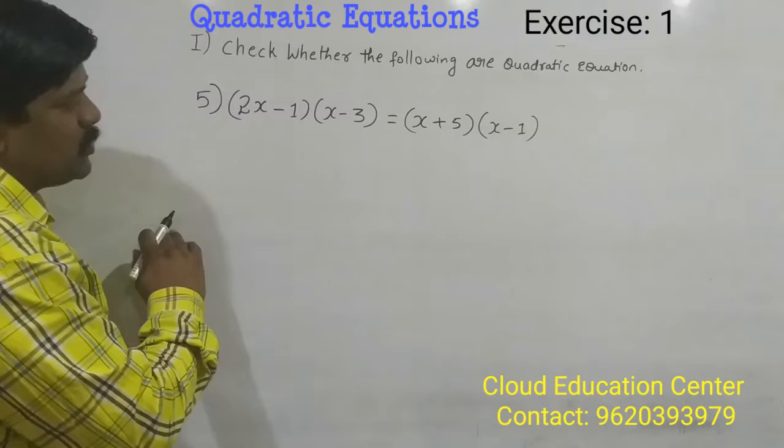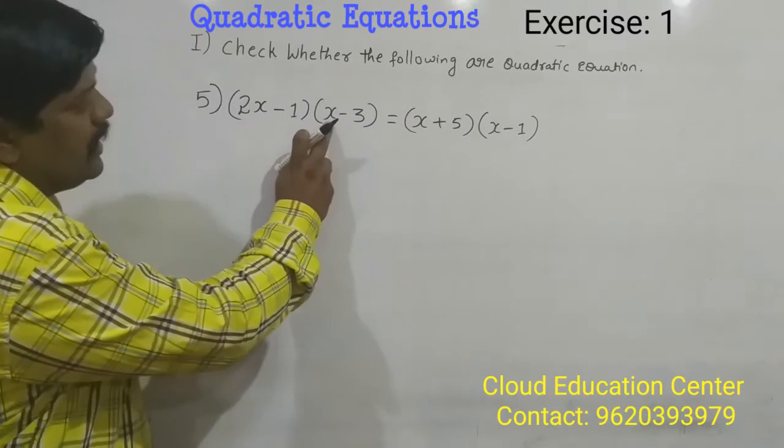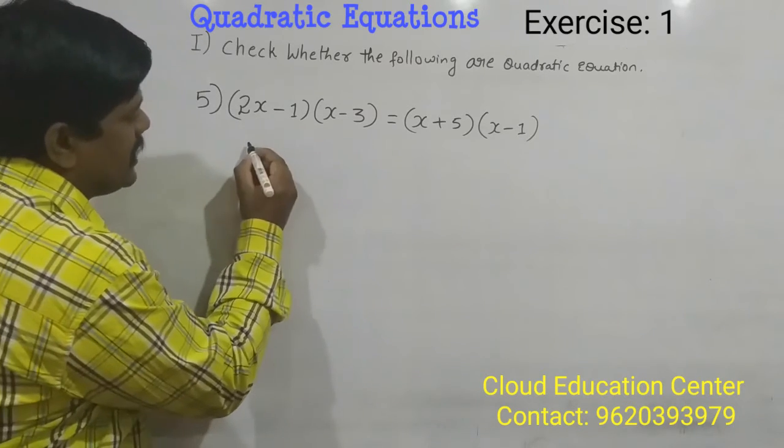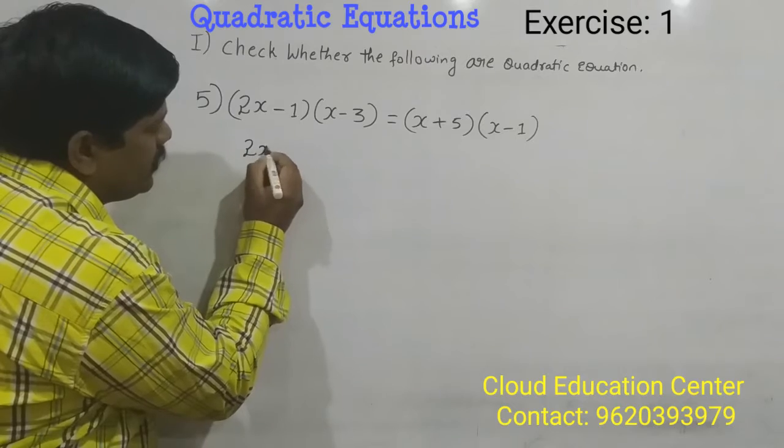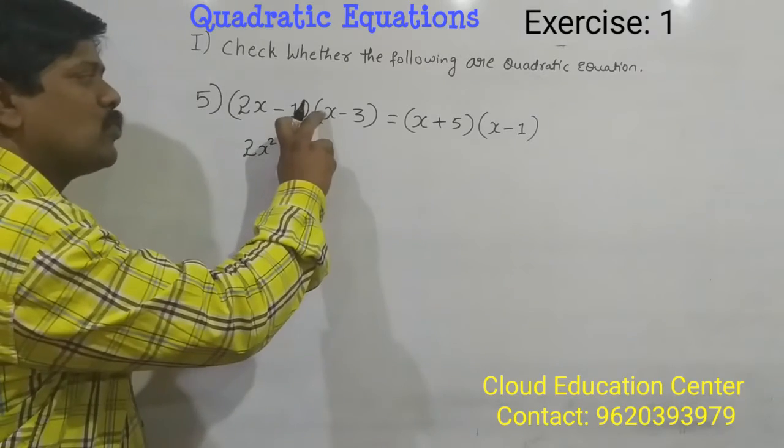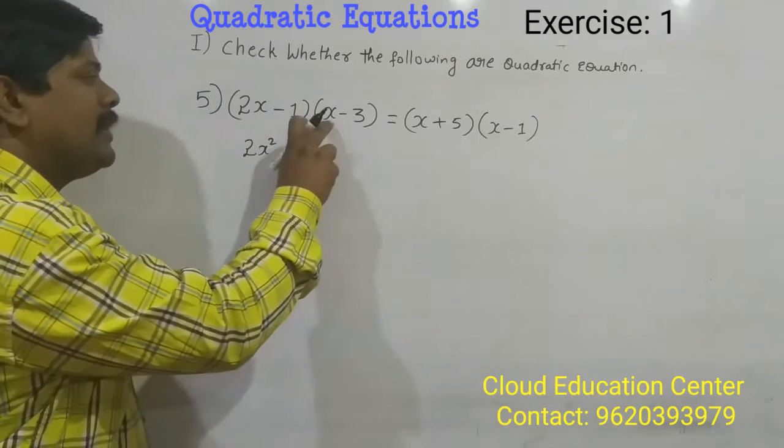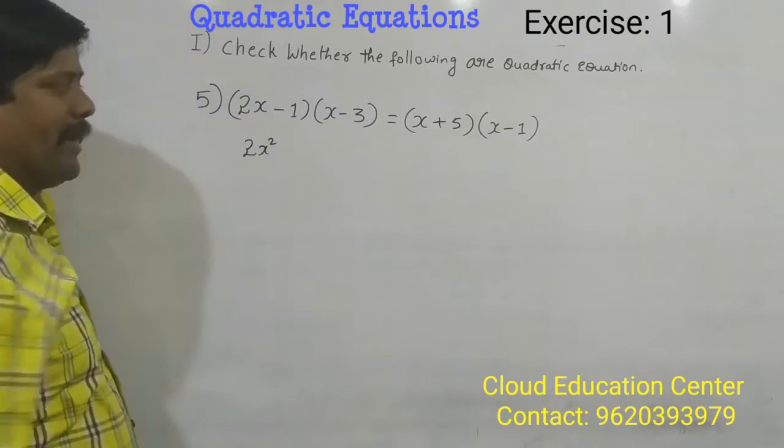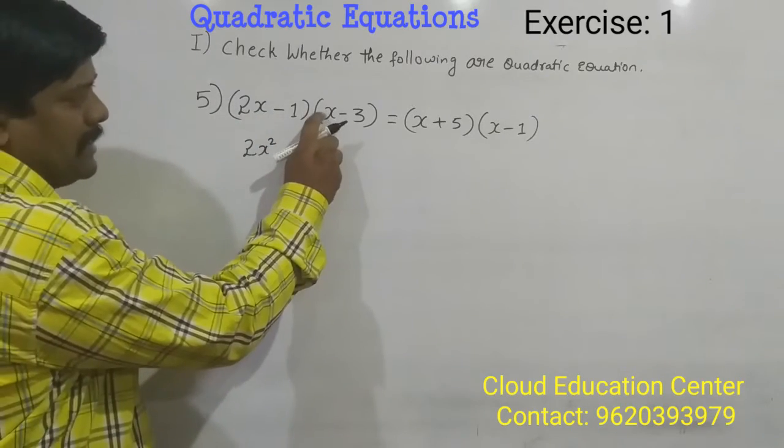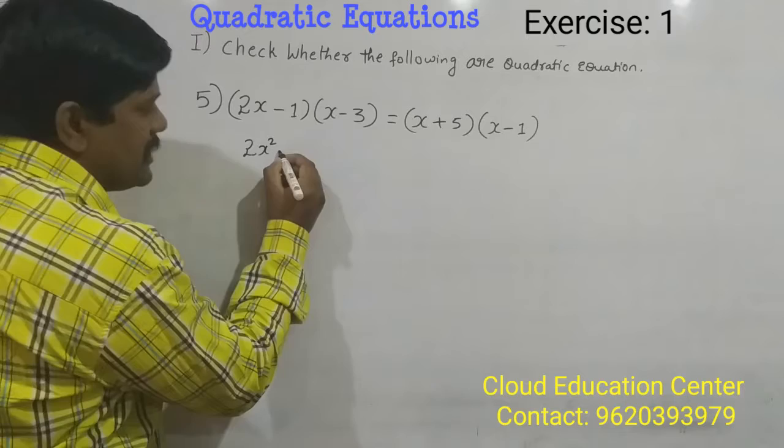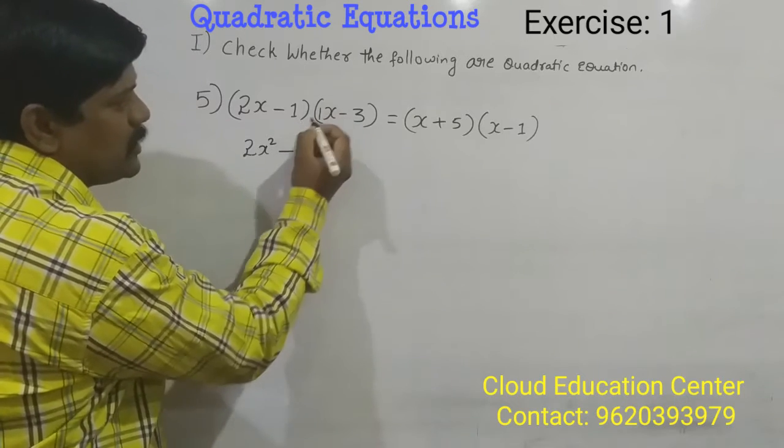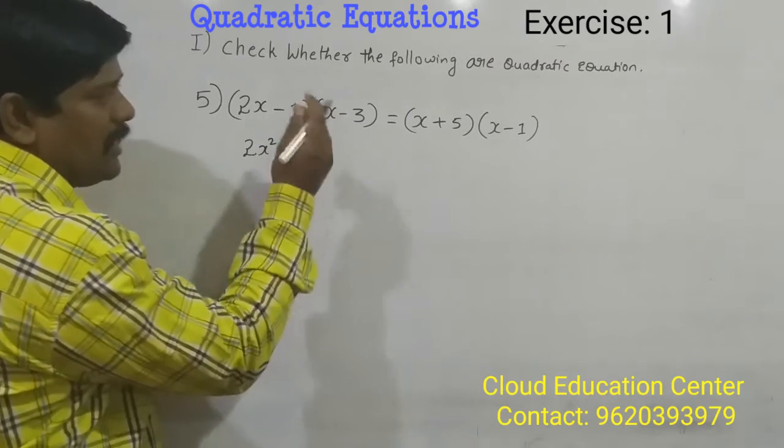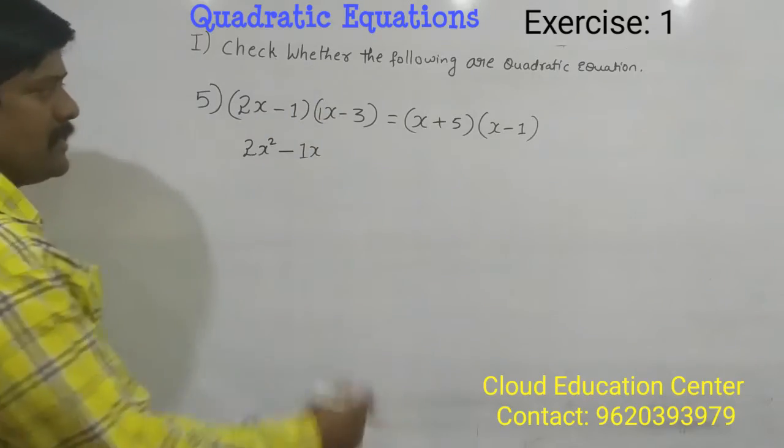Just you multiply these two equations. That is x into 2x is 2x square. See here, 1 into 2 is 2, x into x is x square. Now plus into minus is minus, here 1 into 1 is 1x or 1x into 1 is 1x.